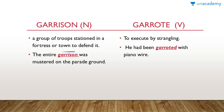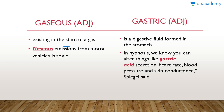Garrison, noun, which means a group of troops stationed in a fortress or town to defend it. In a sentence: 'The entire garrison was mustered on the parade ground.' Garrot is a verb, which means to execute by strangling. In a sentence: 'He had been garroted with piano wire.' Gaseous is an adjective, which means existing in the state of a gas. In a sentence: 'Gaseous emissions from motor vehicles is toxic.'